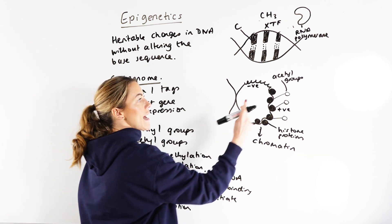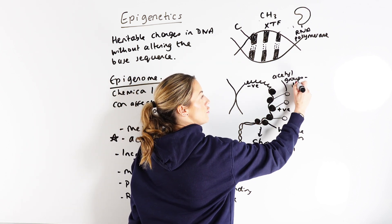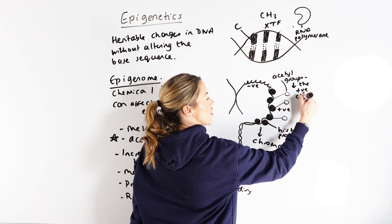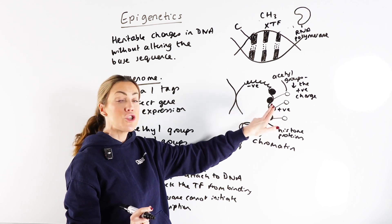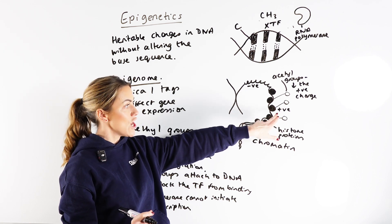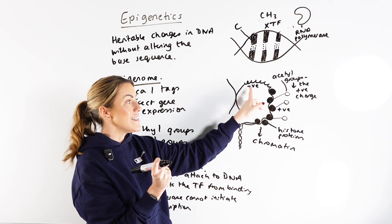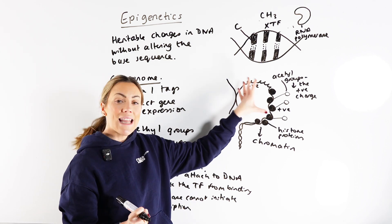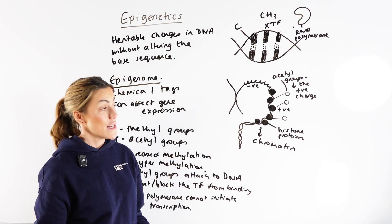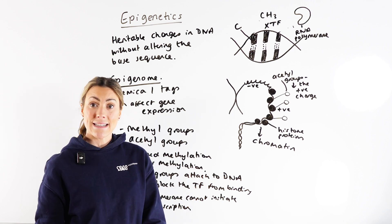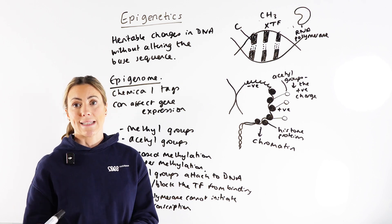When we add acetyl groups to the histone proteins, the acetyl groups reduce the positive charge of the histone proteins. So you've got less of an attraction between the histone proteins and the negatively charged DNA. With less attraction, the DNA-histone protein complex will be less tightly wrapped, which means transcription factors can bind, RNA polymerase can attach, and you will get transcription and gene expression switched on.